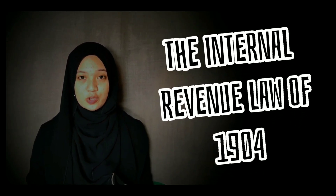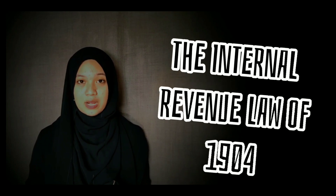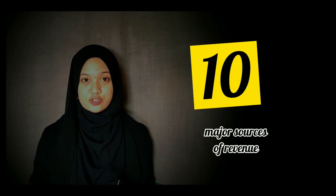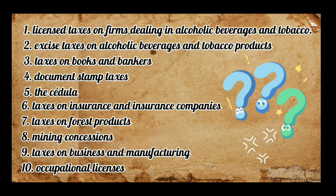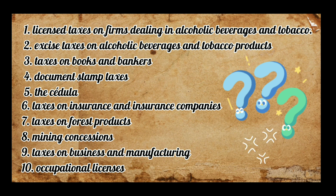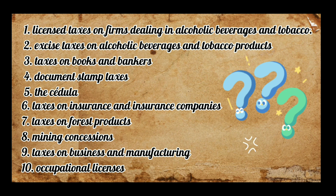The Internal Revenue Law of 1904 was passed as a reaction to the problem of collecting land tax, and it prescribed 10 major sources of revenue: Number 1, license taxes on firms dealing in alcoholic beverages and tobacco; Number 2, excise taxes on alcoholic beverages and tobacco products; Number 3, taxes on banks and bankers; Number 4, documentary stamp taxes; Number 5, the cedula; Number 6, taxes on insurance and insurance companies; Number 7, taxes on forest products; Number 8, mining concessions; Number 9, taxes on business and manufacturing; and Number 10, occupational licenses.